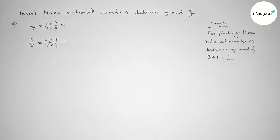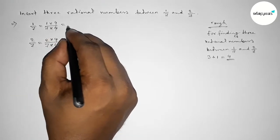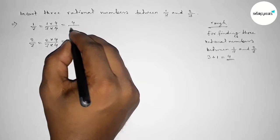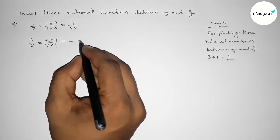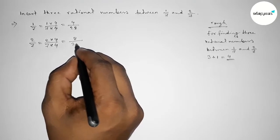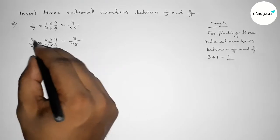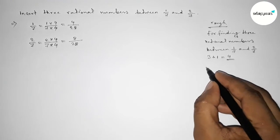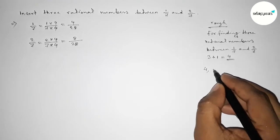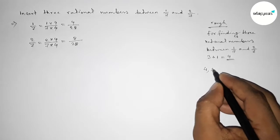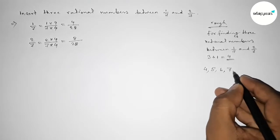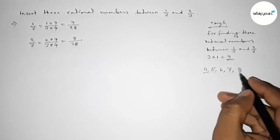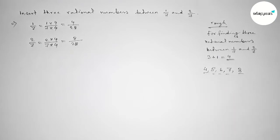So this one 4 over 28 and this one 8 over 28. And this is similar and this is equivalent. So now between 4 to 8 we can get three natural numbers.